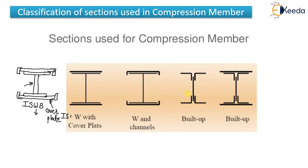Built-up sections are formed by combining various sections. For example, four angles can be arranged — one at each corner — with plates connecting them above and on the sides, bolted together. This creates a strong composite built-up section suitable for heavy compression loads.